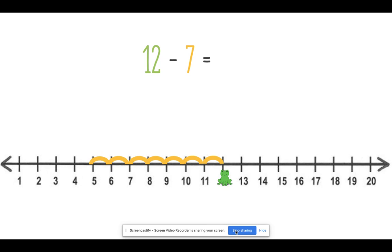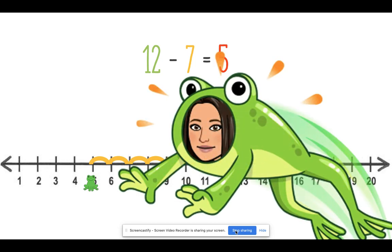12 minus 7. Where is he going to stop? Let's get him to go. 1, 2, 3, 4, 5, 6, 7. 12 minus 7 equals 5. You got it.